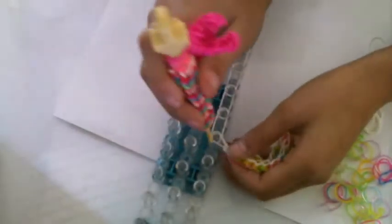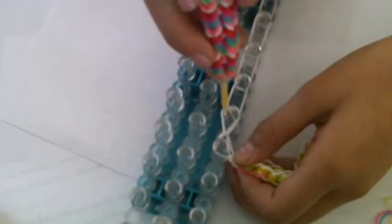Now you're going to start looping. So you're just going to go inside of there just like a chain and start looping up. Just like that. And then that last band. Then you're going to stretch that to the middle peg. And you're just going to hook it.